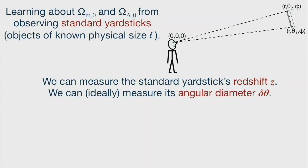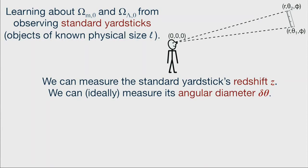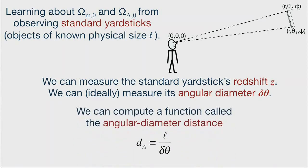This standard yardstick emits light — otherwise we wouldn't see it — and we're assuming you can measure its redshift, maybe from absorption or emission lines, so redshift z is measurable. We also assume it's angularly resolved so you can measure the angle delta-theta from one edge to the other. If you know the physical size of the object, you can compute what cosmologists call the angular diameter distance: it's defined as the physical size l of the object in megaparsecs divided by the angular diameter delta-theta measured in radians.